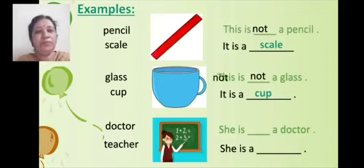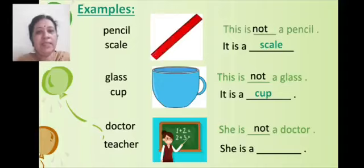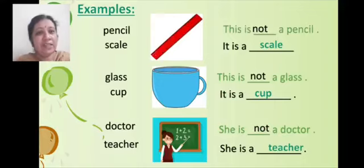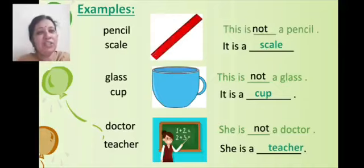Now see the next picture: doctor — D-O-C-T-O-R — and teacher — T-E-A-C-H-E-R. In the blank line, what we will write? She is not a doctor. She is a teacher. Teacher is teaching on the blackboard; she is writing on the blackboard. A doctor does not write on the blackboard. So she is a teacher.